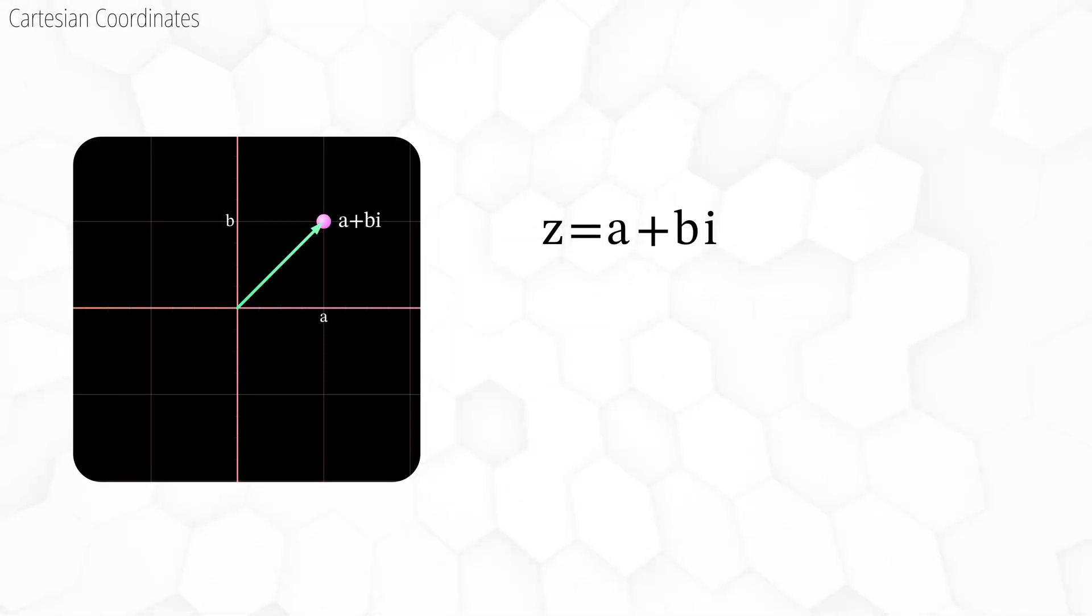So far we have represented complex numbers in Cartesian form. For example, z equals a plus bi, where a is the real part and b is the imaginary part.